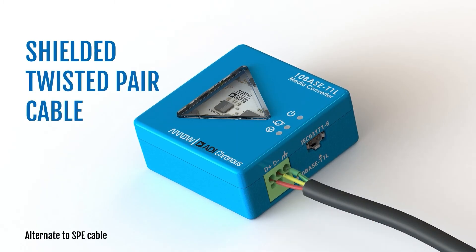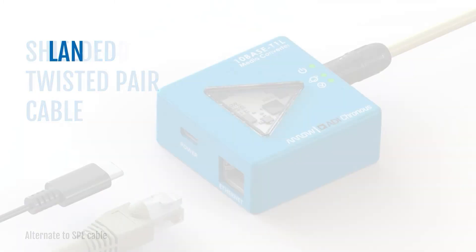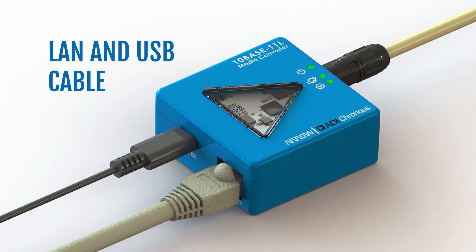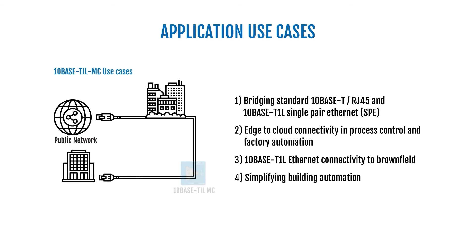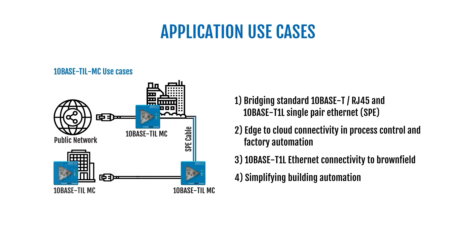The Media Converter is a compact solution ideally suited to accelerate the deployment of the new 10Base T1L physical layer by providing a bridge between 10Base T RJ45 and single pair Ethernet SPE. It can be leveraged to connect standard Ethernet switches to new 10Base T1L devices to enable edge-to-cloud connectivity for building and industrial automation solutions.